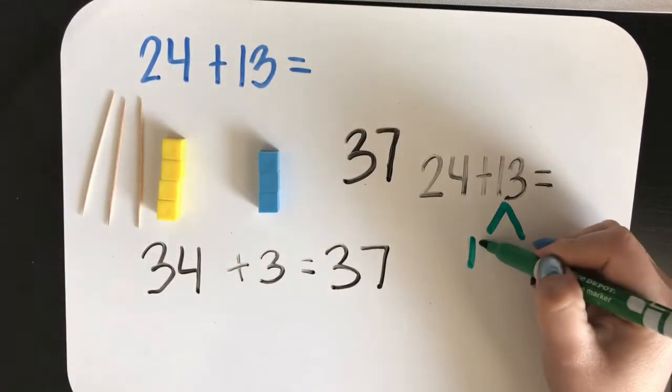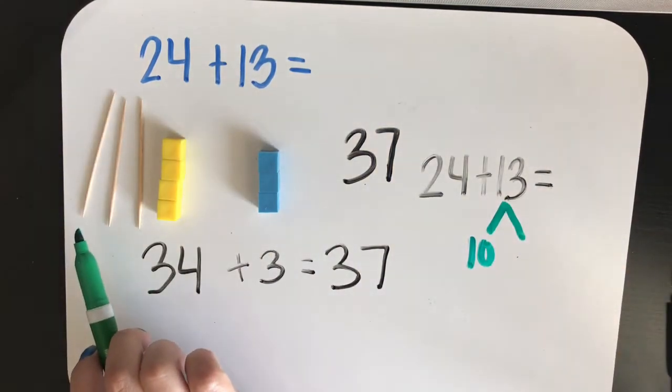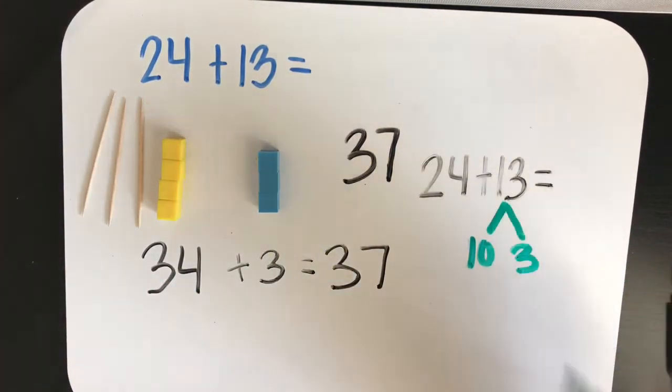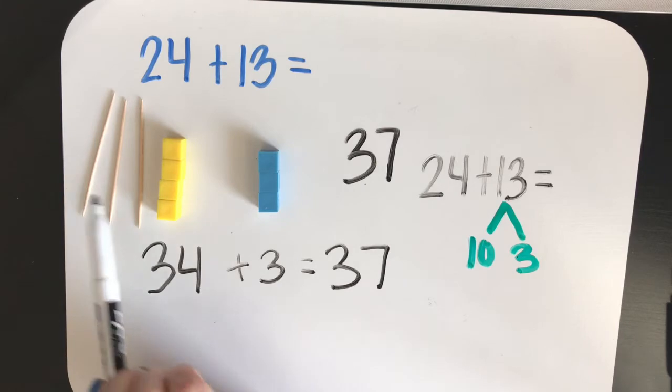So, one part became ten, and the other part that was left over was three. Now, we are going to add the ten, just like we did with our manipulatives.